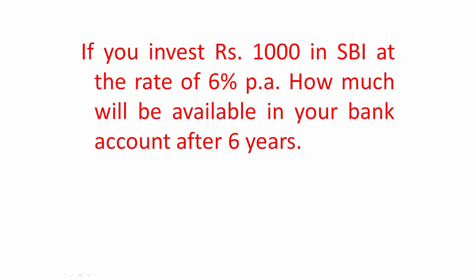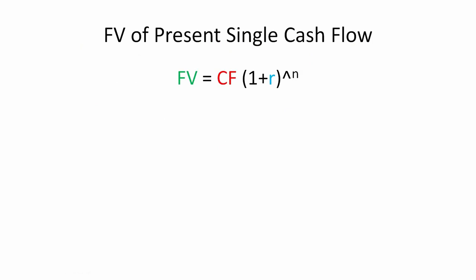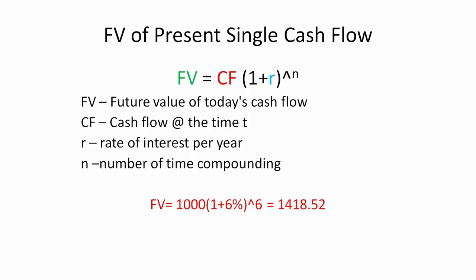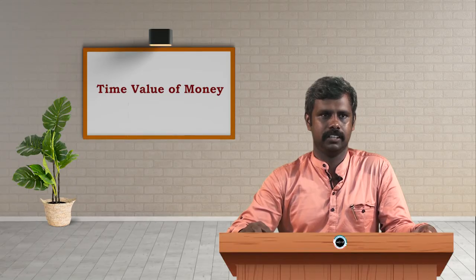This is a single cash flow future value example. If you invest 1000 rupees in SBI bank at the rate of 6 percent per annum, how much will be available in your bank account after six years? We have a formula because we cannot go period by period for six years. The future value of present cash flow is: FV = CF × (1 + r)^n. Substituting the values — cash flow of 1000 rupees, rate of 6 percent, and n equal to 6 years — we end up with 1480 rupees 52 paise at the end of the sixth year.